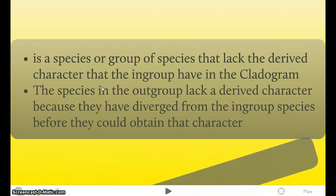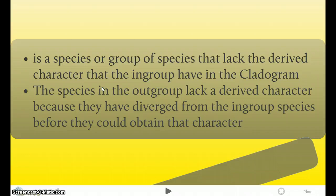The Out-Group is a species or group of species that lacks the Derived Character that the In-Group has in the Cladogram. And the species in the Out-Group lack the Derived Character because they have diverged from the In-Group Species during Evolution before they could obtain that Character.